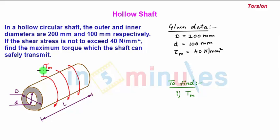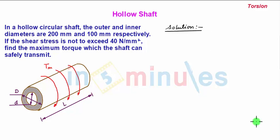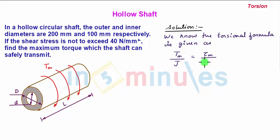So we have to find this Tm. Let's solve the problem. Solution: we know the torsional formula is given as maximum torque Tm upon J, which is polar moment of inertia, is equal to maximum shear stress τm upon capital R, which is the maximum outer radius from the center of the shaft.